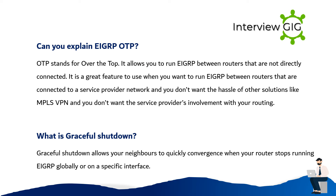Can you explain EIGRP OTP? OTP stands for Over The Top. It allows you to run EIGRP between routers that are not directly connected. It is a great feature to use when you want to run EIGRP between routers connected to a service provider network and you don't want the hassle of other solutions like MPLS VPN, or don't want the service provider's involvement with your routing.